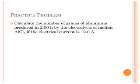Here's a typical problem. We want to calculate the number of grams of aluminum produced in two hours by the electrolysis of molten aluminum chloride, AlCl3, if the electrical current is 12 amps. What's our half reaction? We're going from aluminum ions to aluminum. How many electrons will that take? Three. So we need to know this. We have our time in hours. We have to convert that to seconds.